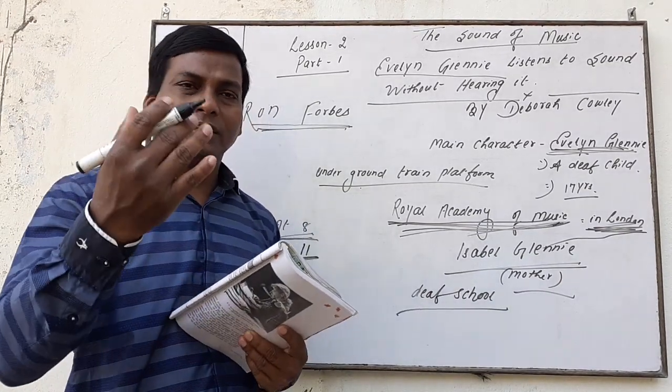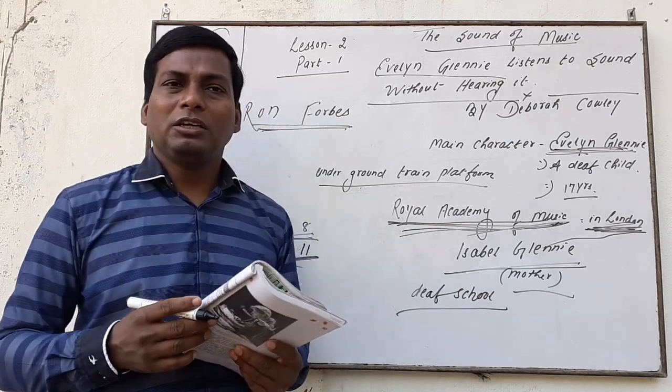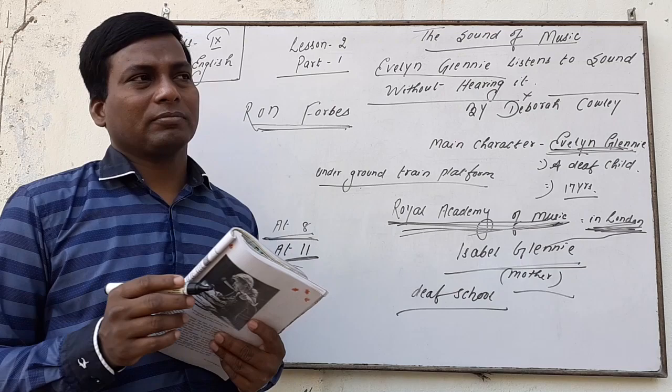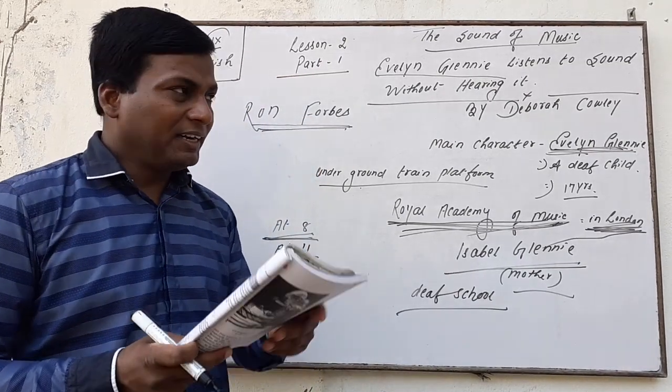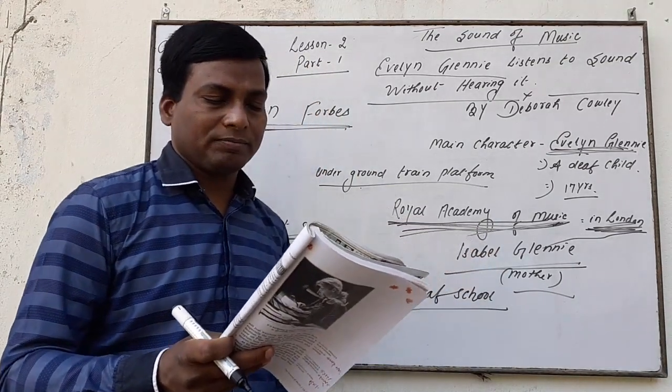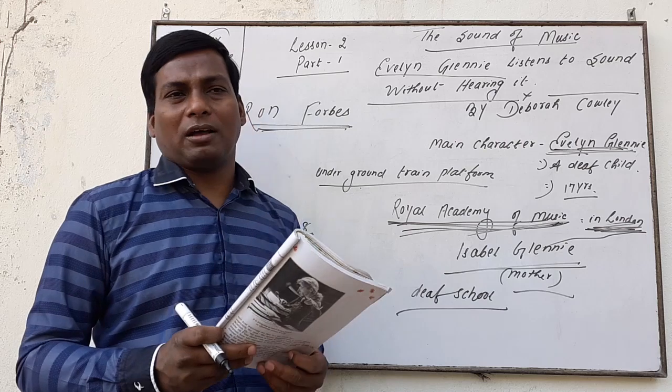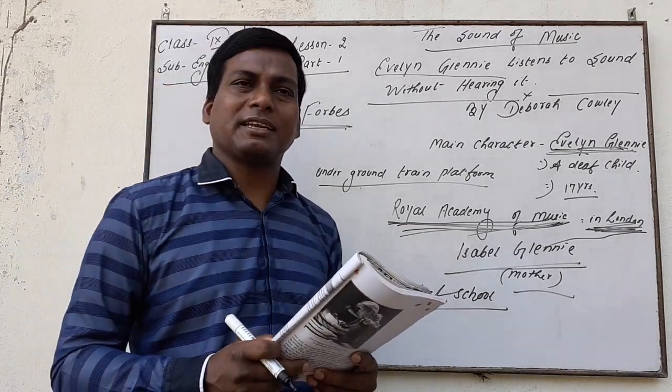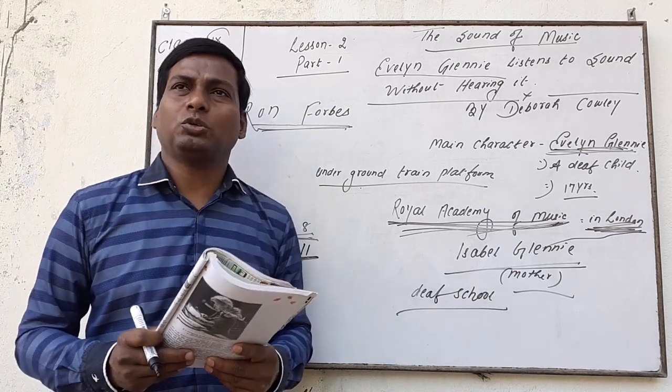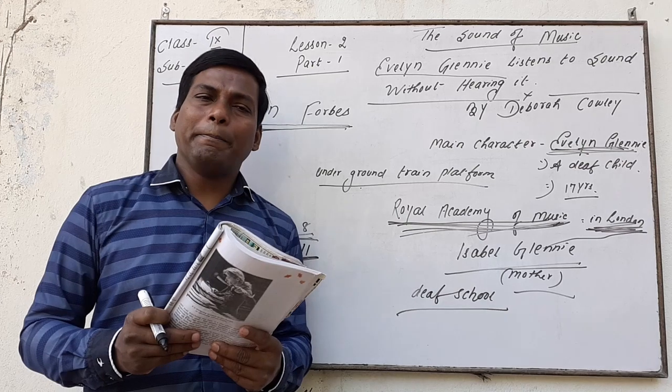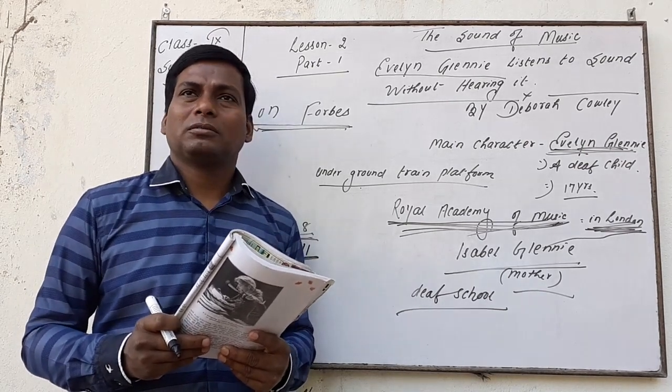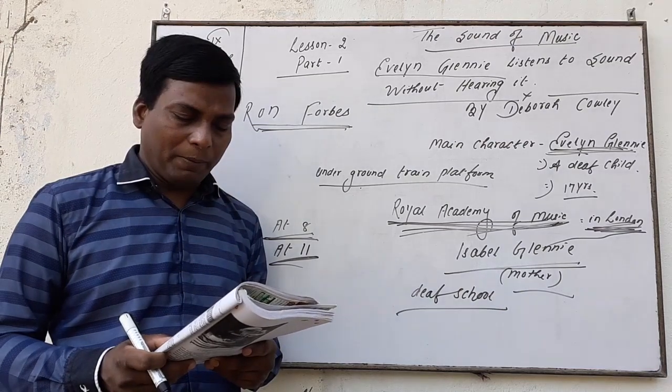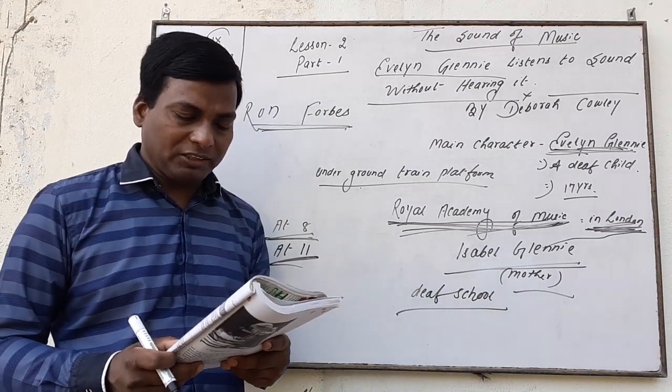She never looked back from that point onwards. She toured the United Kingdom with a youth orchestra. Orchestra means a group of musical players. And by the time she was 16, at the age of 16, she toured so many countries to take part in orchestra, with a group of musicians. She auditioned for the Royal Academy of Music and scored one of the highest marks in the history of the academy.